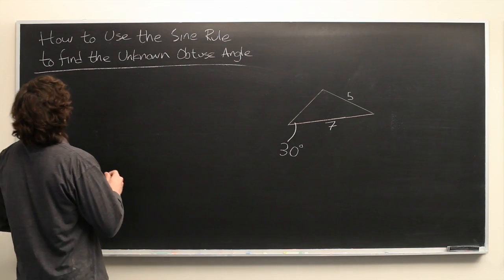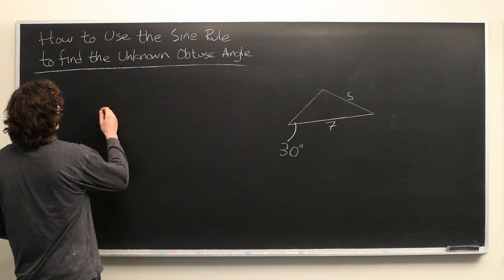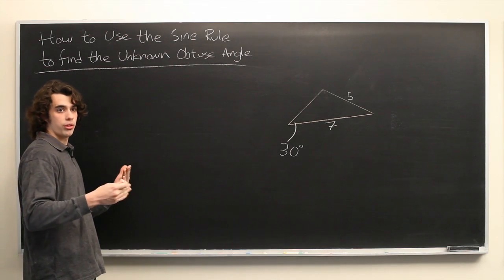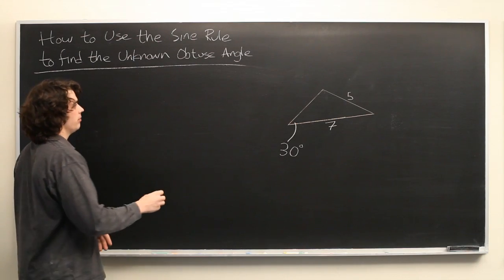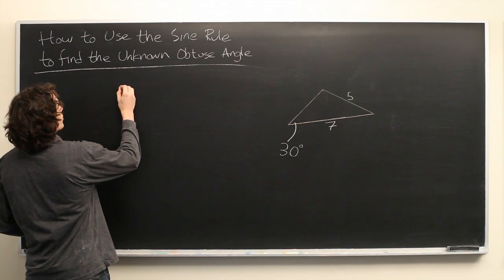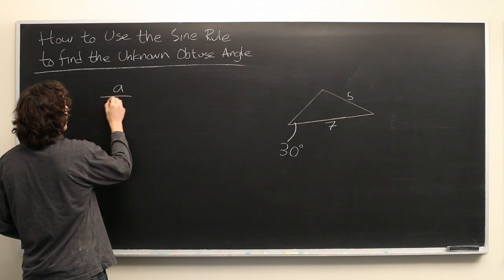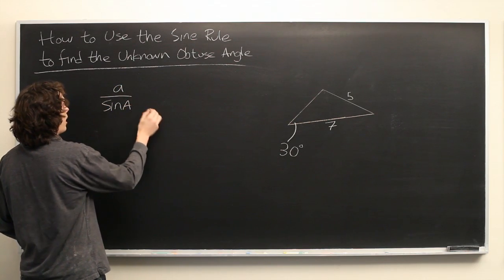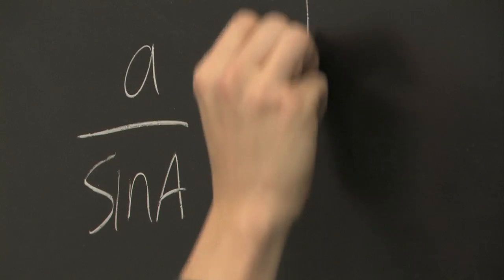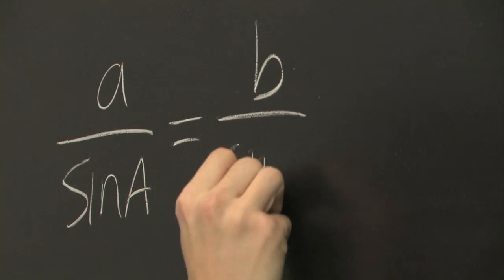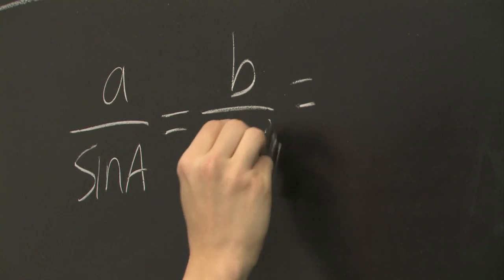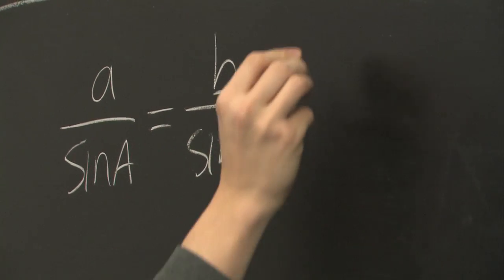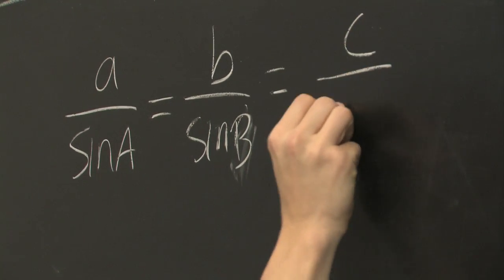So the sine rule, also referred to as the law of sines, states that in any triangle with sides a, b, and c, and opposite angles also a, b, and c, the following is true. a over the sine of angle a equals b over the sine of angle b, which is equal to c over the sine of angle c.